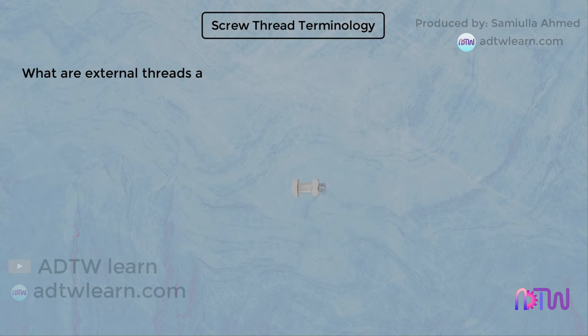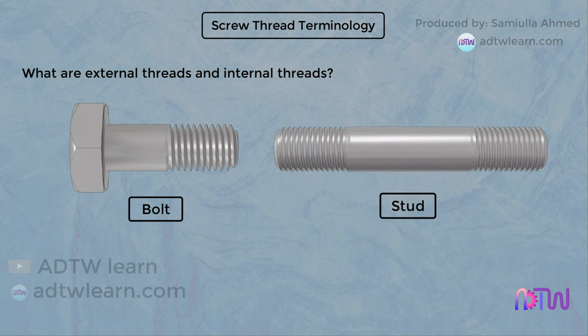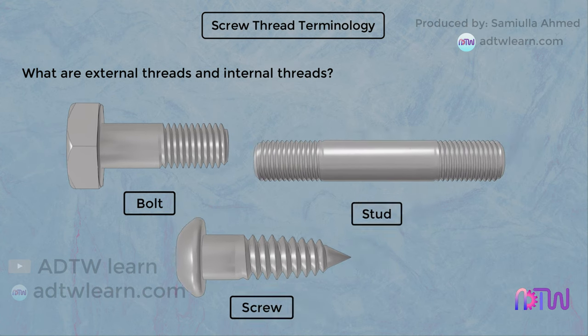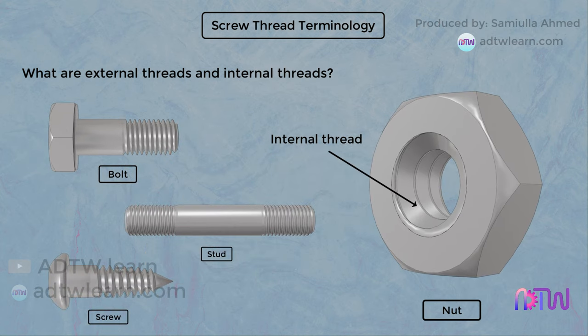What are external threads and internal threads? Threads that are present on the bolts, studs, or screws are called external threads. On the other hand, the threads which are present on the inside of the nuts are called internal threads.